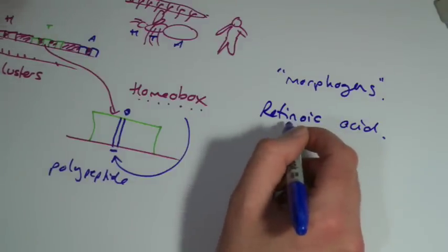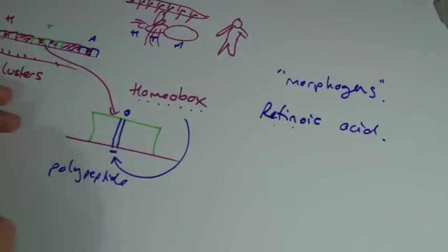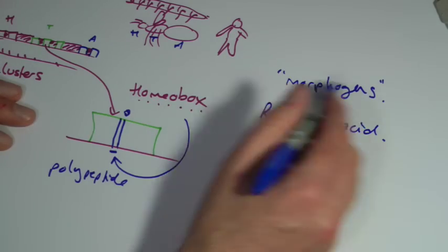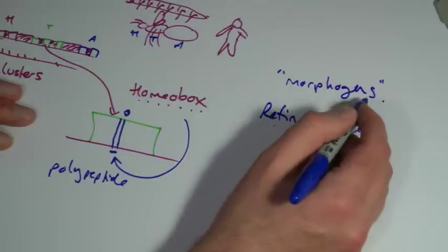And this is related or derived from vitamin A, so you might know it in terms of retinol. You know people talking about vitamin A being good for your eyes - this is actually what it produces, retinoic acid, and it can act to switch these things. It can act as a morphogen basically.